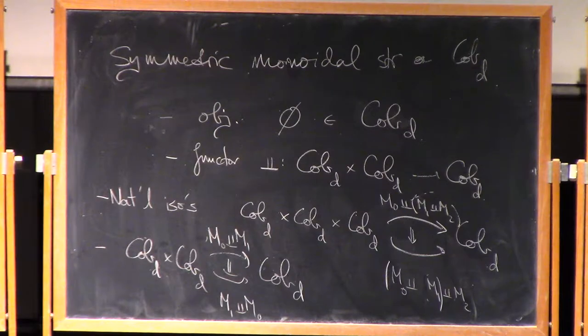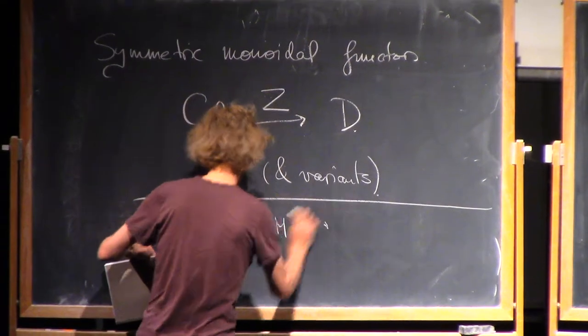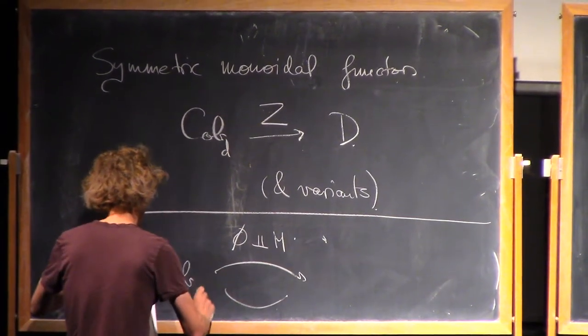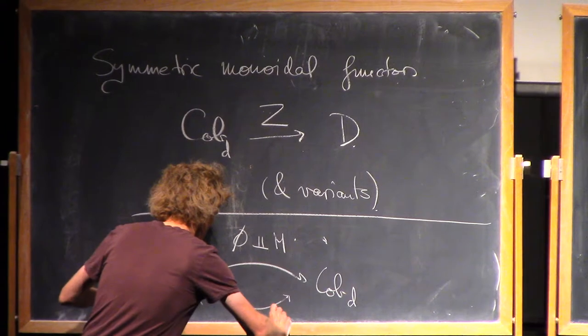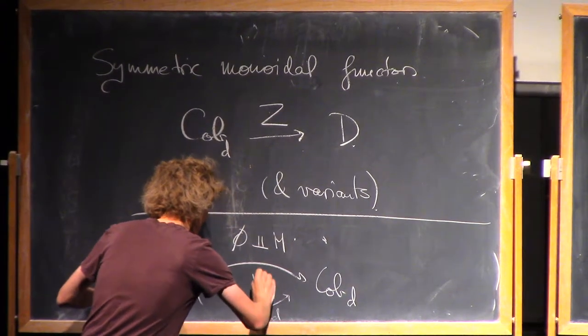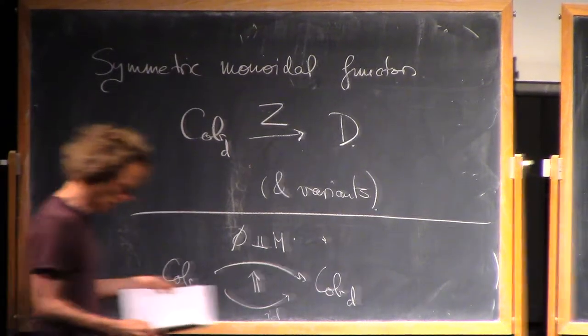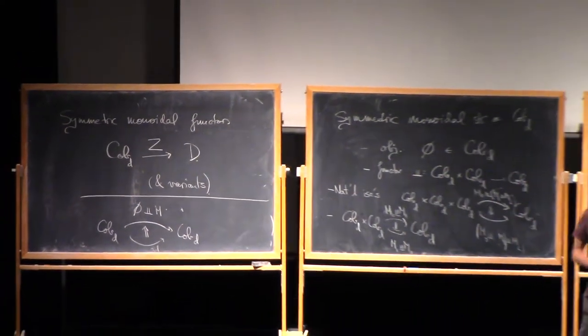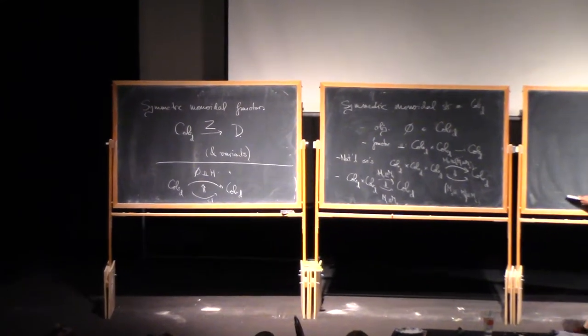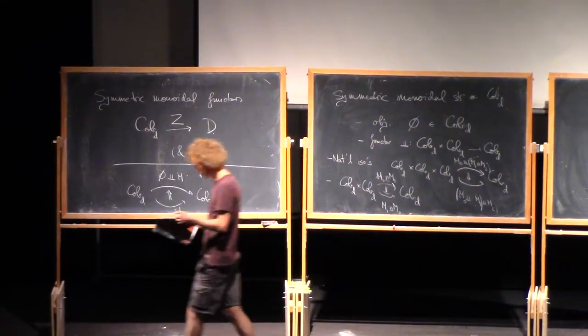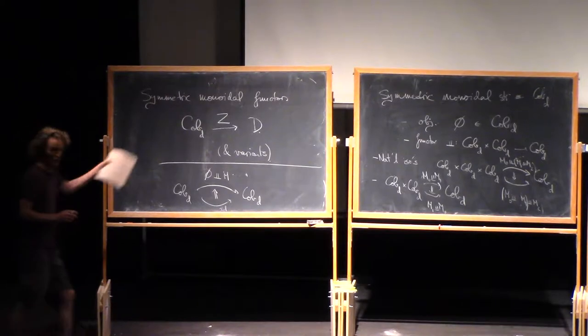And the last natural isomorphism goes from empty set disjoint union M. This is one of the functors. Cob_D to Cob_D. You can take disjoint union with empty set and then you could just take the identity. They're naturally isomorphic. And there's a preferred natural isomorphism. So that's the structure you have to specify to say that Cob_D is a symmetric monoidal category. And then the four axioms. The most famous one maybe is called the Pentagon axiom. Let me not write them. So that's how it's a symmetric monoidal category.